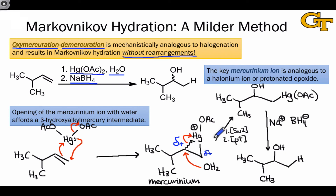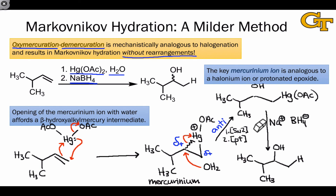Opening of the mercurinium ion does occur in an anti-fashion. We can see this again by drawing an analogy to halogenation, cohalogenation, or even opening of a protonated epoxide with water. However, because the starting mercurinium ion was generated as a racemic mixture, we should expect a racemic mixture of alcohol products here as well.